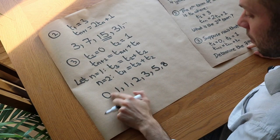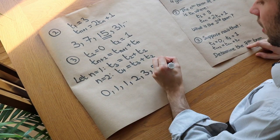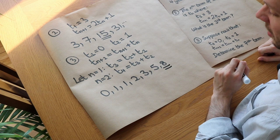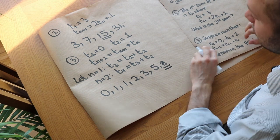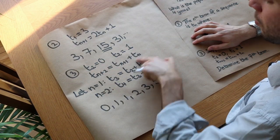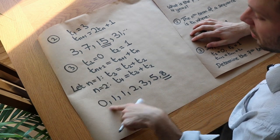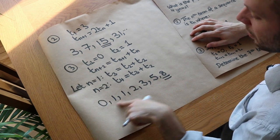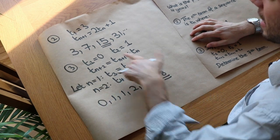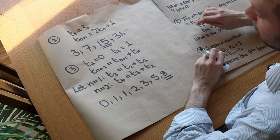Counting through: the seventh term is 13. Wait — 0, 1, 1, 2, 3, 5, 8 — the seventh term is 8. This is the term-to-term formula for the Fibonacci sequence. You might recognise it — it's called the Fibonacci sequence, and it can be represented using this formula.